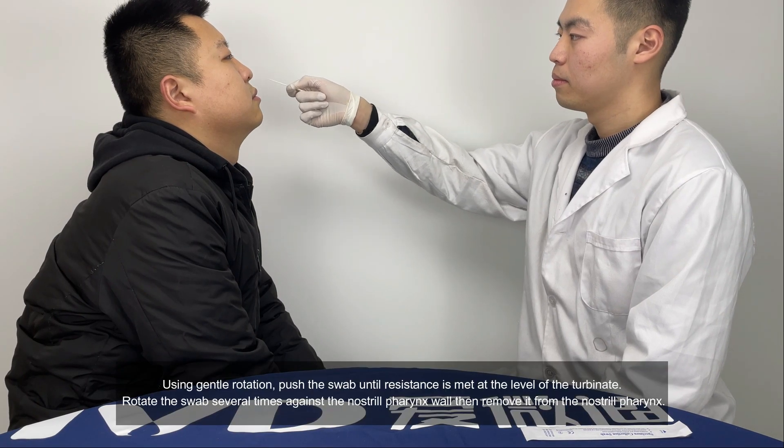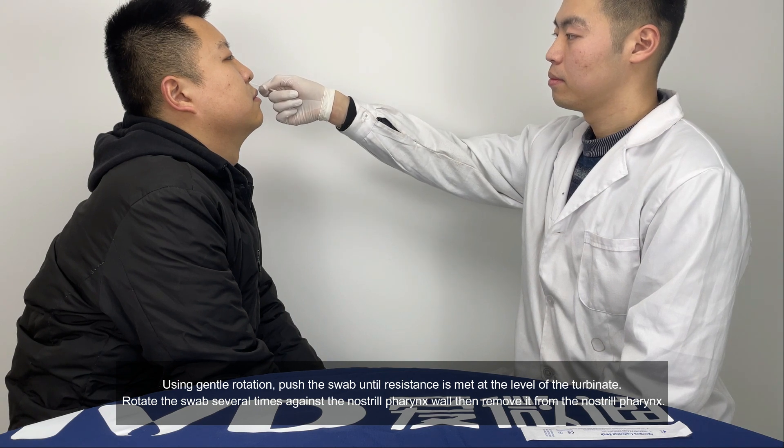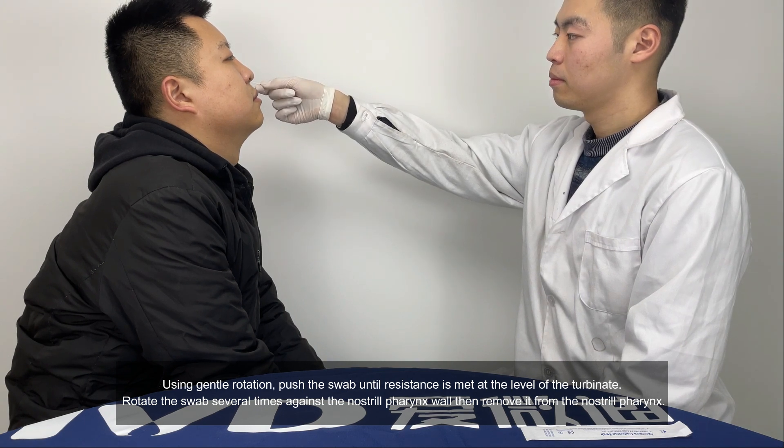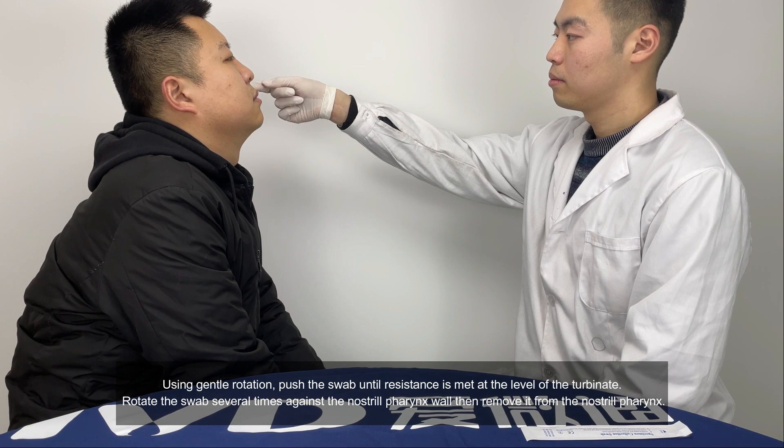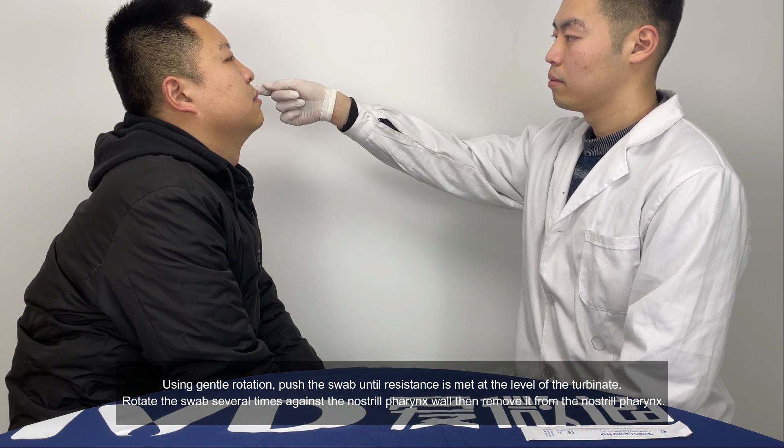Using gentle rotation, push the swab until resistance is met at the level of the turbinate. Rotate the swab several times against the nostril wall, then remove it from the nostril.